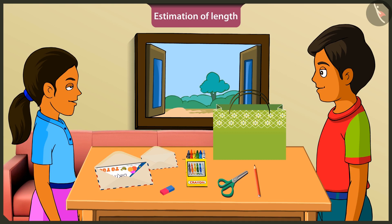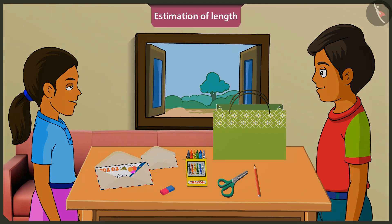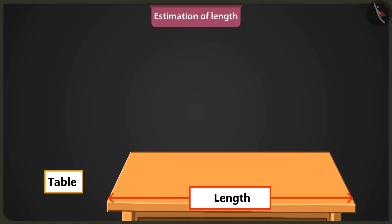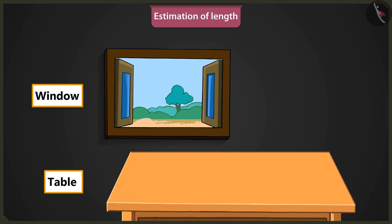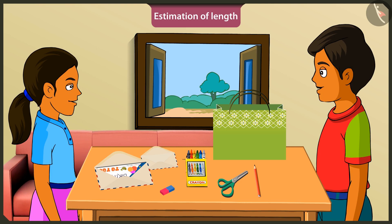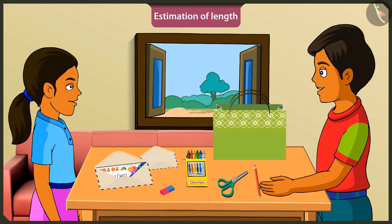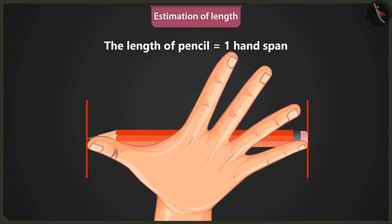Well done, Mintu. Now tell me, what is the estimated length of this table? This table looks longer than the window. The length of the window is six spans of my hand, so this table must be approximately twelve hand spans long. Now try to measure the length of this pencil with your palm. The length of this pencil is equal to one hand span.